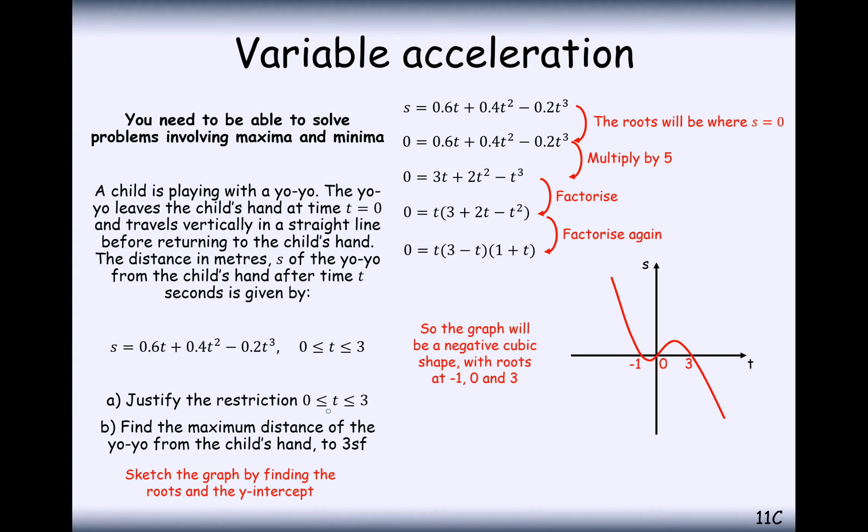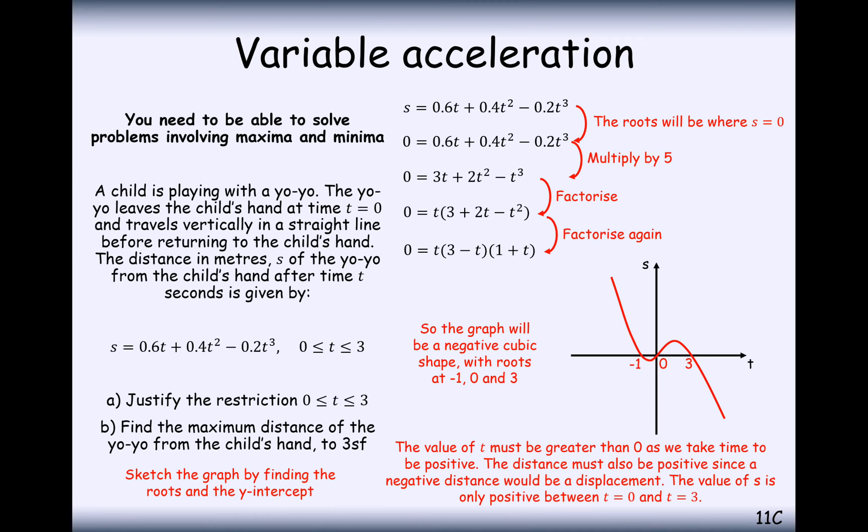that t should be in between 0 to 3 because it should only really be a positive distance away from the child's hand. And it's only a positive displacement when s is in between 3 and 0. So that's basically the justification there. We shouldn't have a negative displacement. The only values where s is positive, apart from less than minus 1 back in time, is in between 0 to 3.